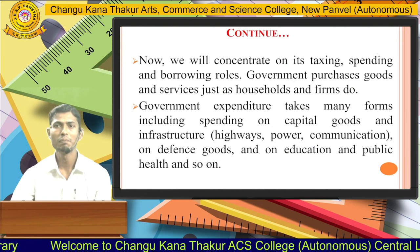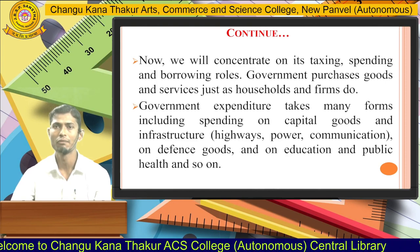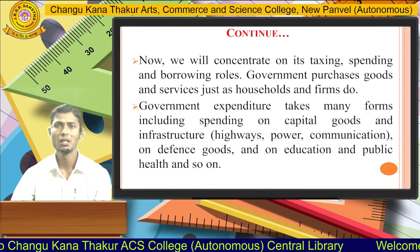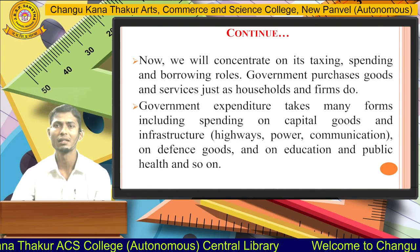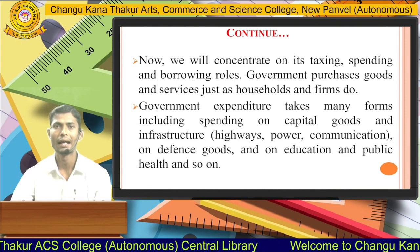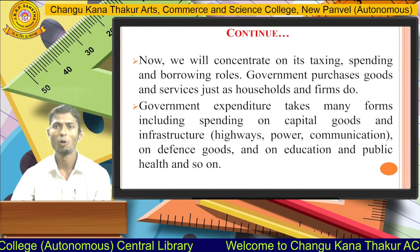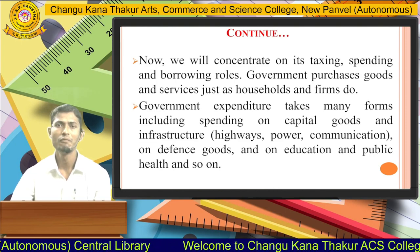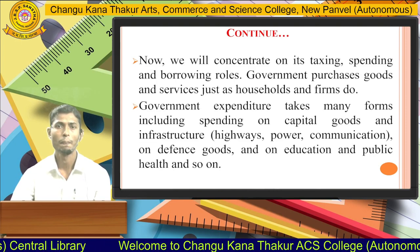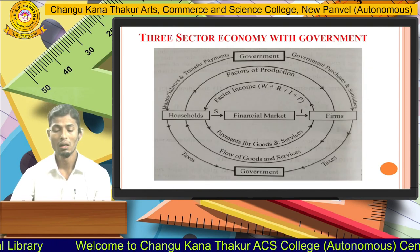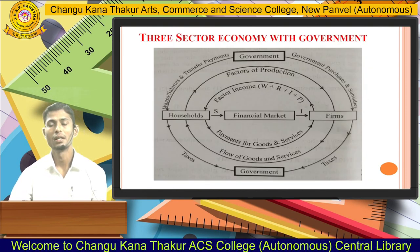Government purchases goods and services just as households and firms do. Government expenditure takes many forms including spending on capital goods and infrastructure, highways, power, communication, defense goods, education, and public health.